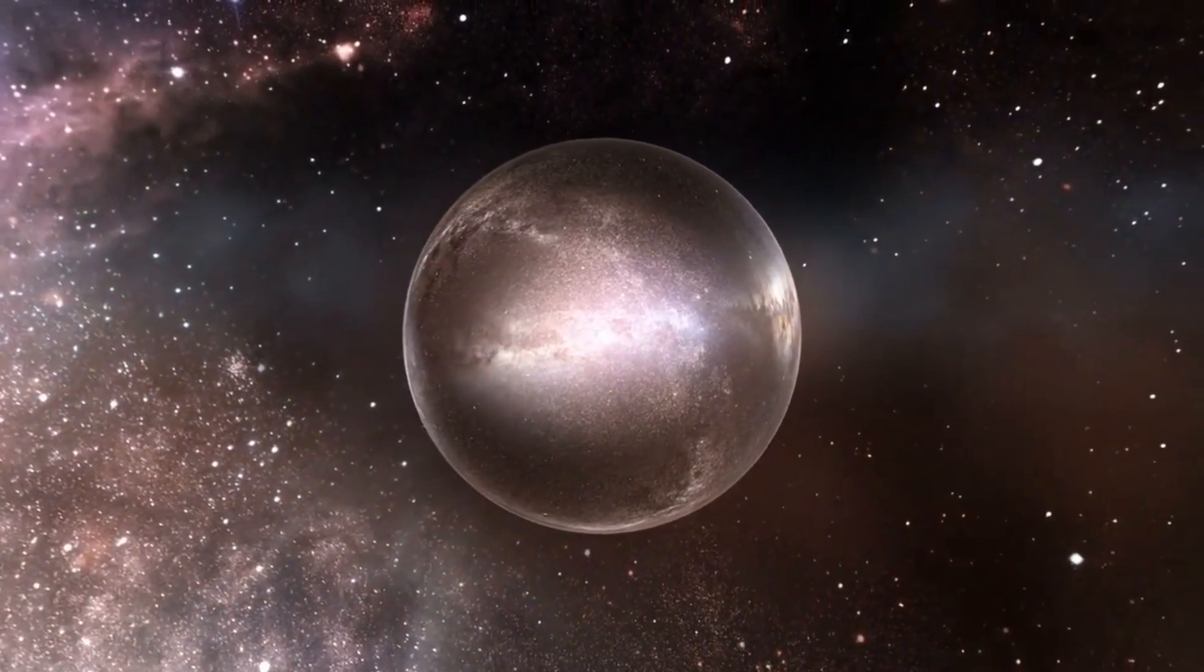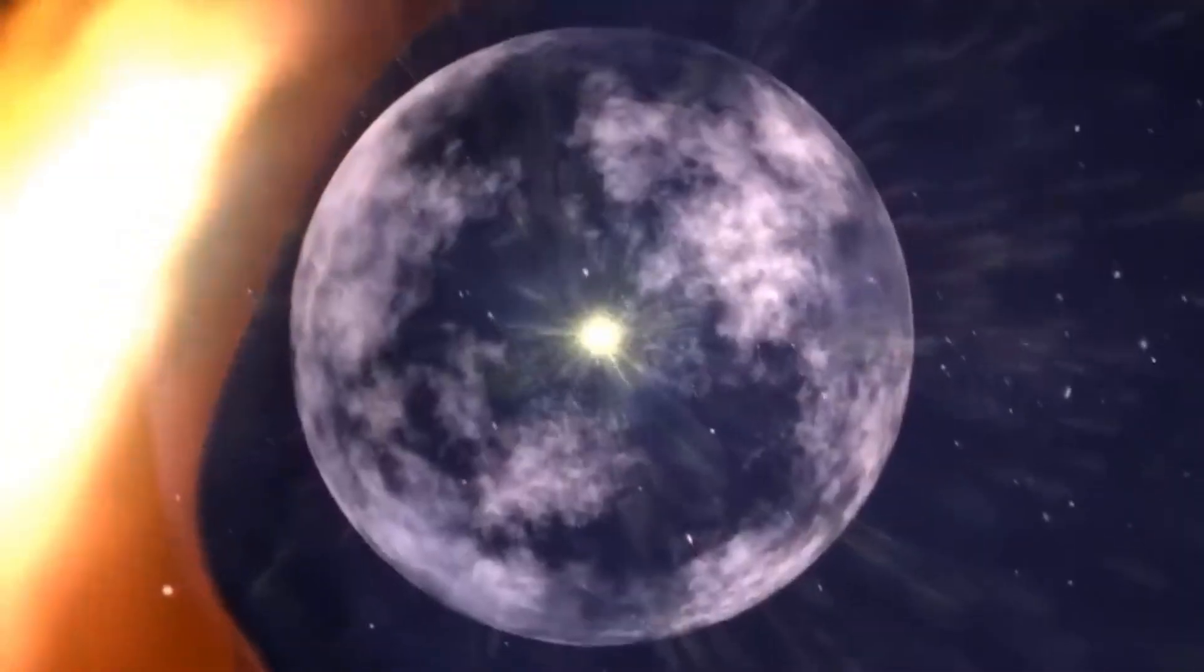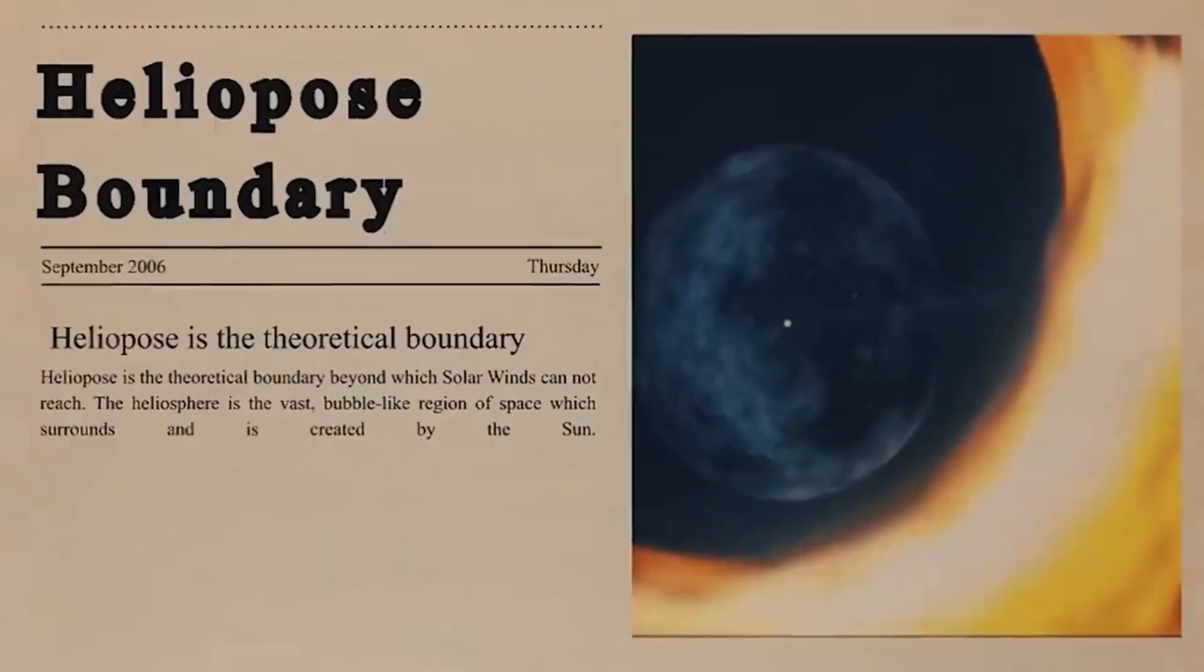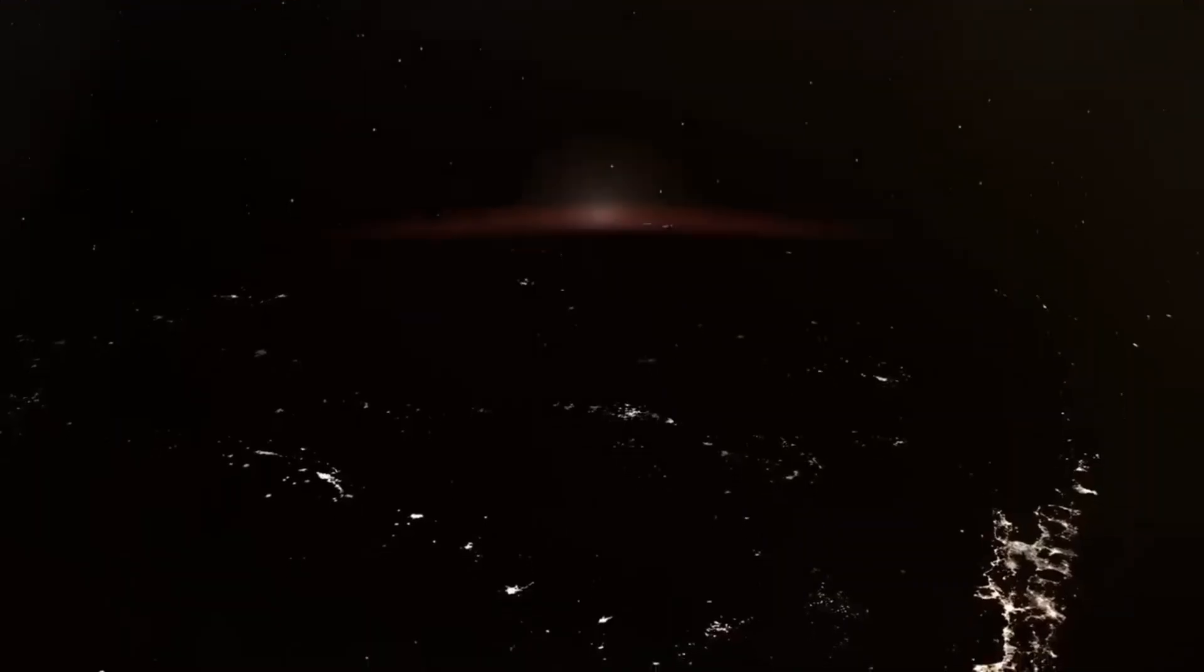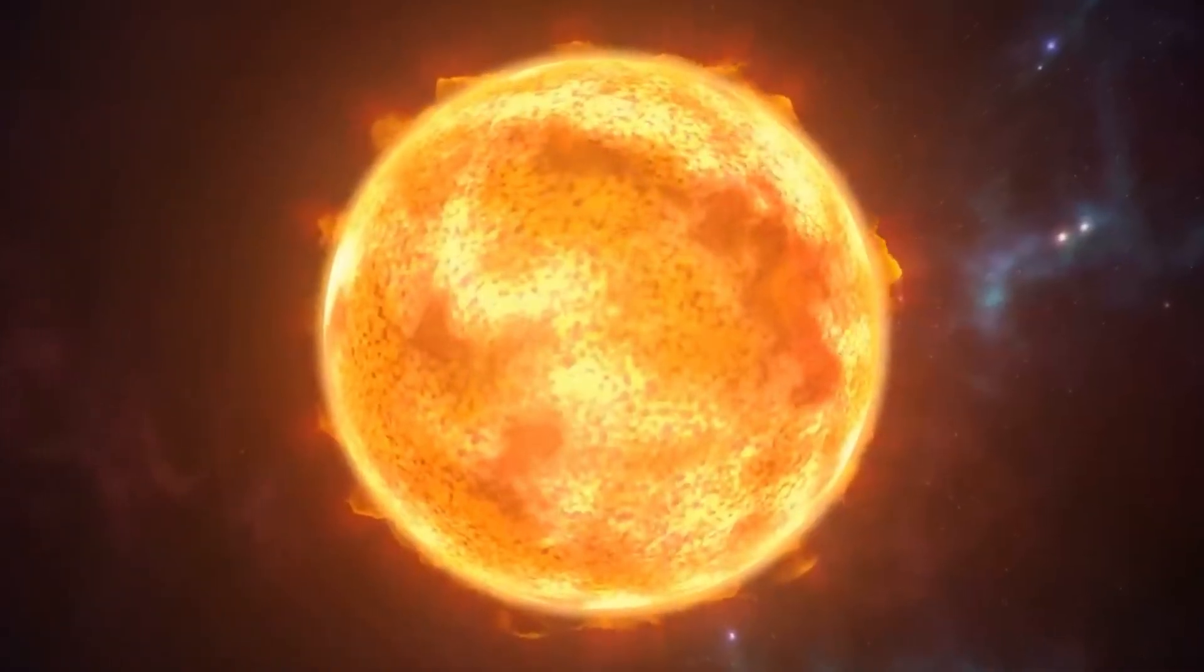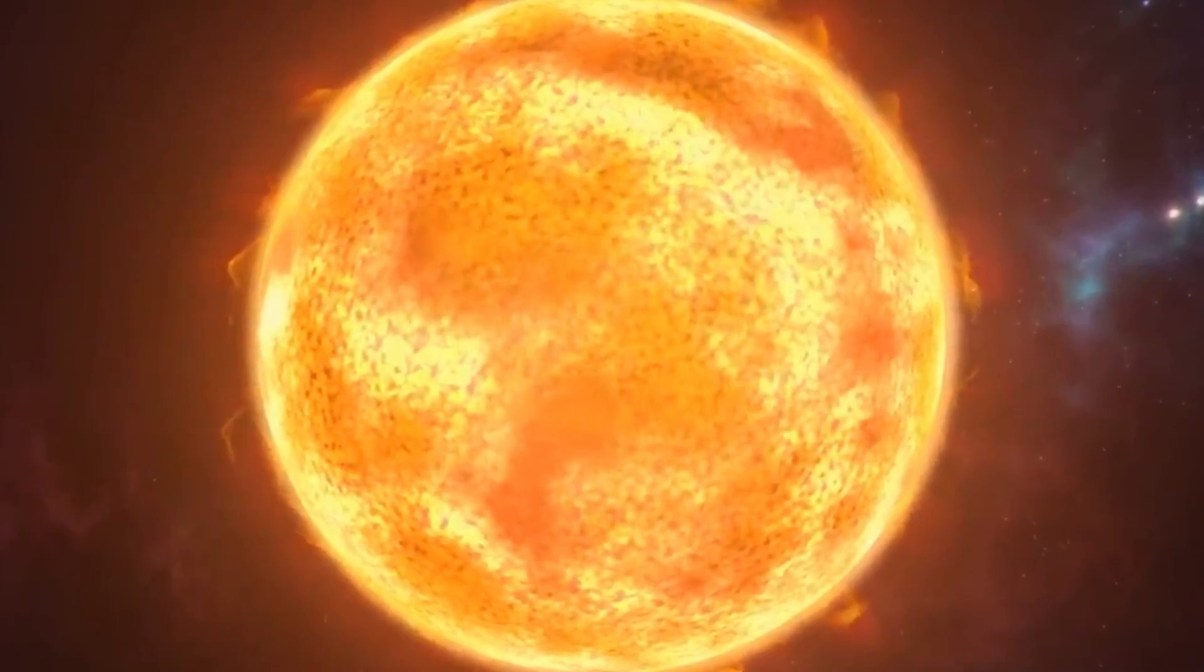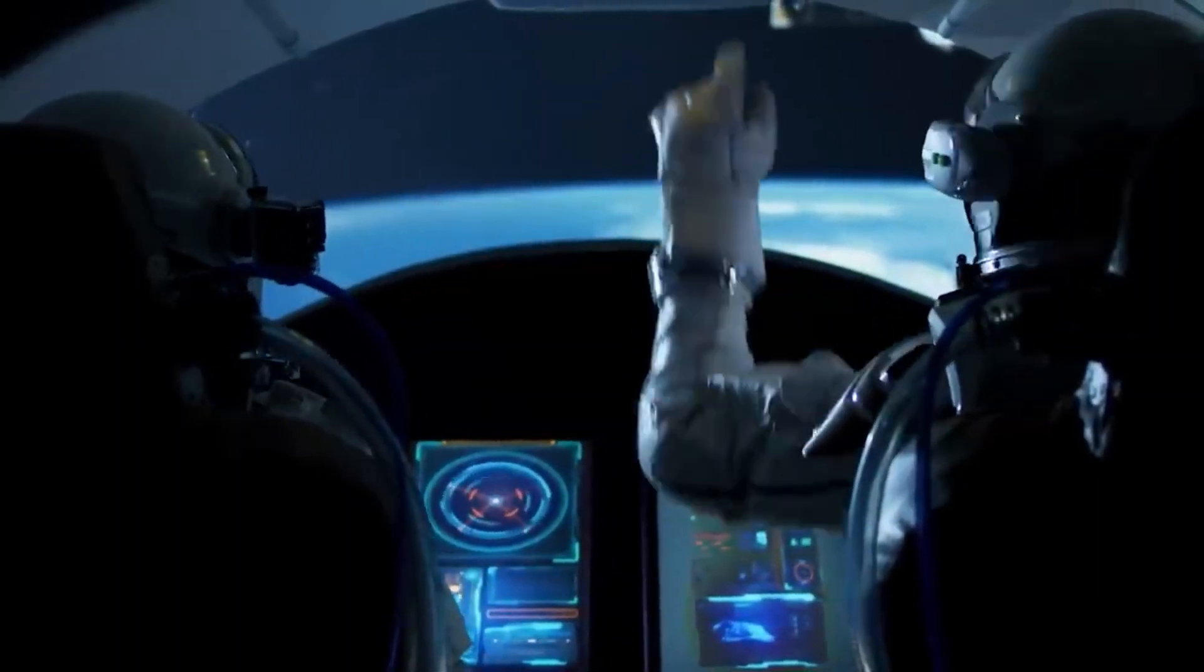After this, Voyager 1 headed out of the solar system, while Voyager 2 headed toward Uranus. There, it found 11 previously unknown moons and two previously unknown rings. Many of the phenomena it observed on Uranus remained unexplained, such as its unusual magnetic field and an unexpected lack of major temperature changes at different latitudes. Voyager 2's final stop, 12 years after it left Earth, was Neptune.